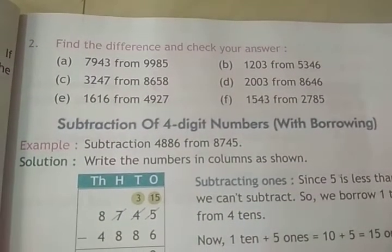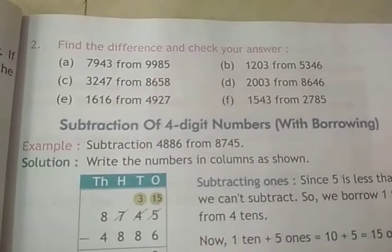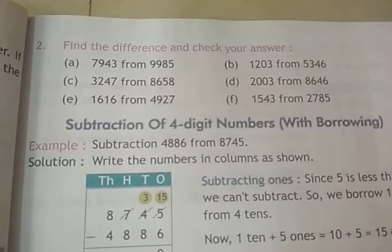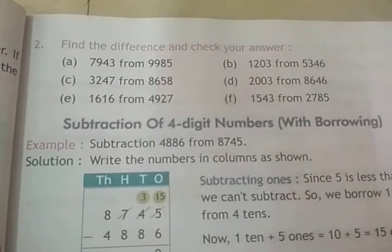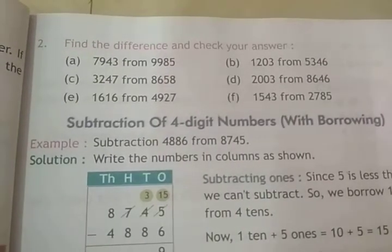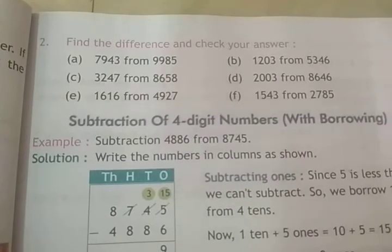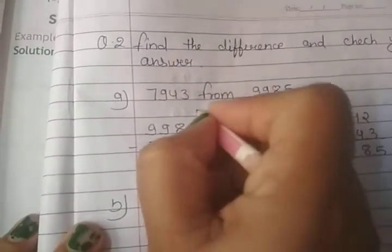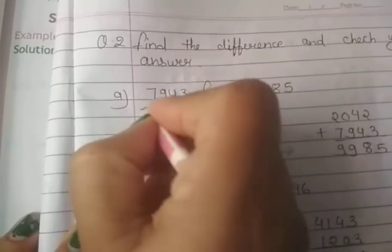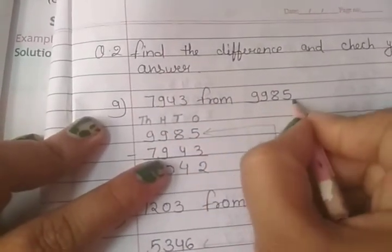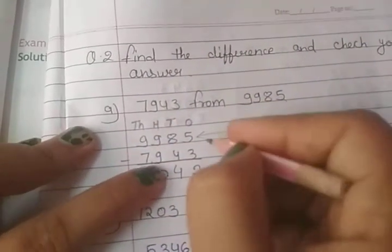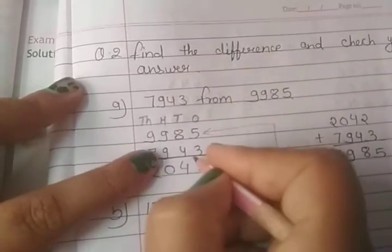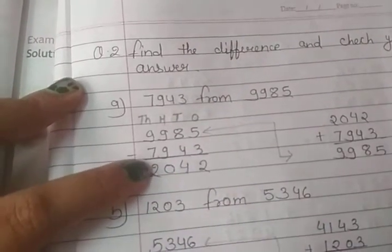Question number two: find the difference and check your answer. Pehle humein difference find karna hai — subtract karna hai — then answer ko check karna hai ki answer sahi hai ya nahin. First question A: seven thousand nine hundred forty-three from nine thousand nine hundred eighty-five. Ones: five minus three — two. Eight minus four — four. Nine minus nine — zero.